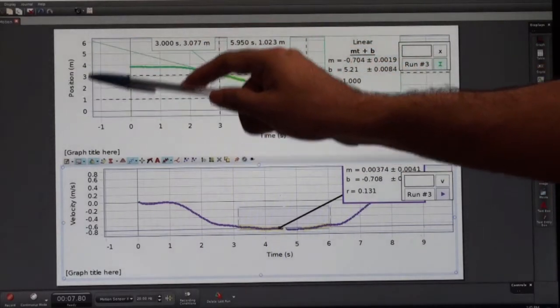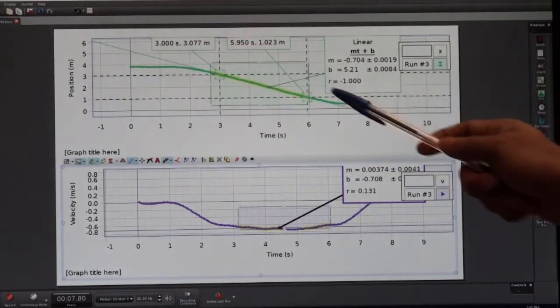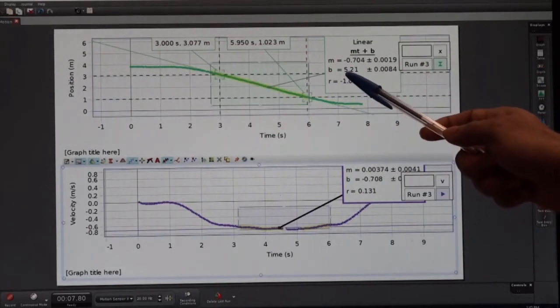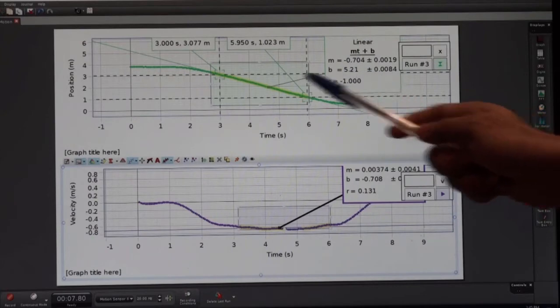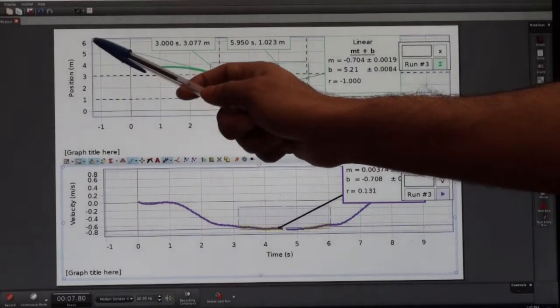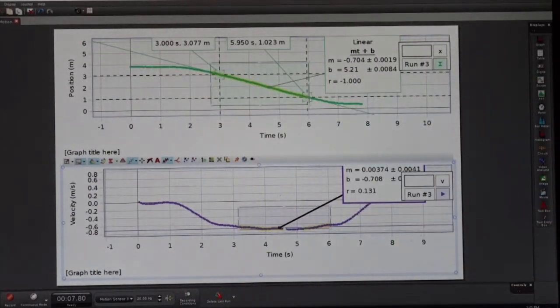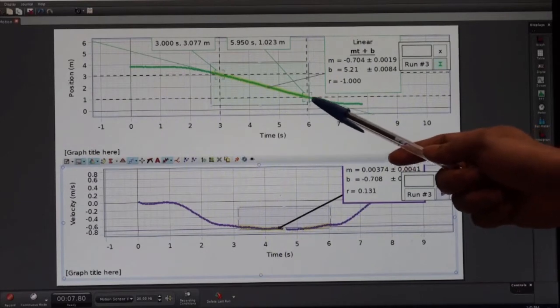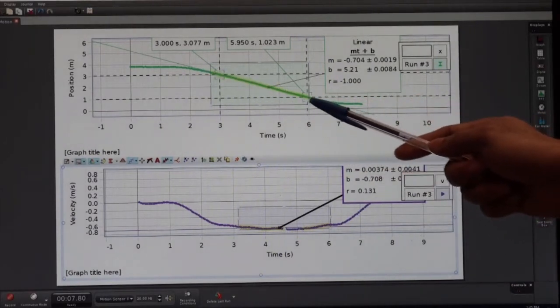This straight line is intercepting on the position axis. The interception is plus 5.21 meters here at some point. If you now select two points on this graph to find the slope...